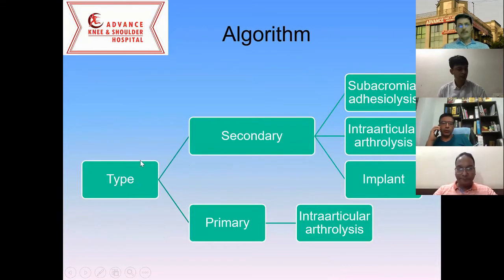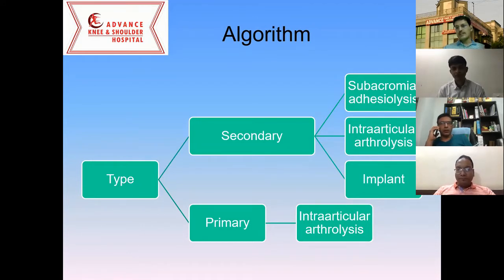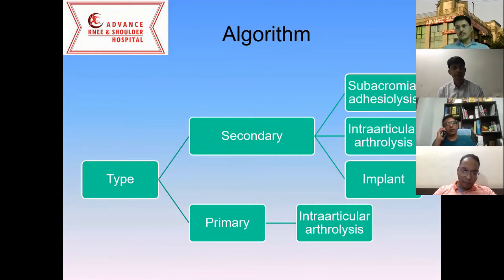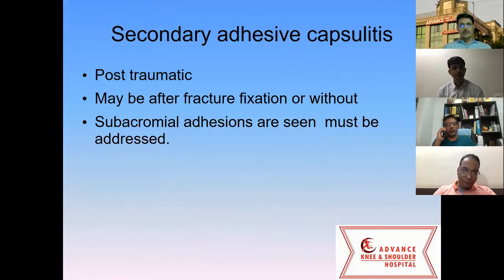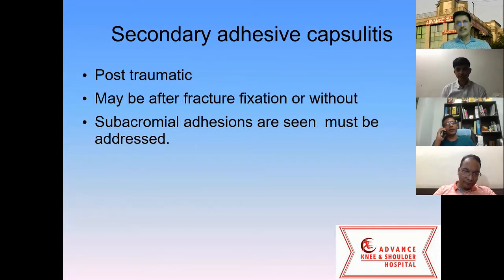If it is a primary or idiopathic adhesive capsulitis, you can straight away do intra-articular arthrolysis. If it is secondary adhesive capsulitis — probably secondary due to trauma or previous surgeries — you need to do both intra-articular as well as subacromial work. If there are implants like screws or plates, you have to address those as well. Secondary adhesive capsulitis is common in post-traumatic scenarios like plating, where full motion is not regained, and in these cases there will be intra-articular as well as subacromial adhesions present.